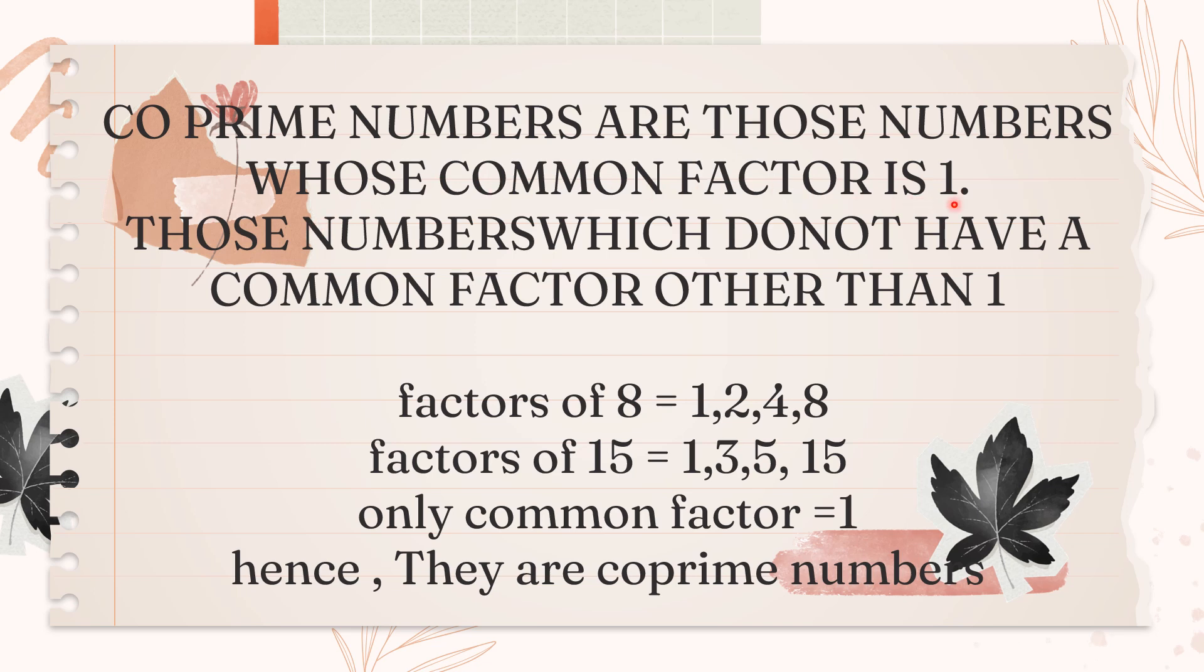So what you're going to do is first calculate the factors of those numbers, then search for the common factor. If the common factor is only 1, then those numbers are called co-prime numbers.